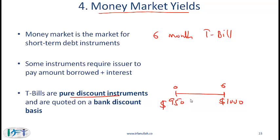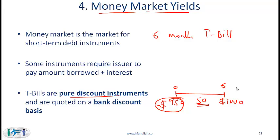From the investor perspective, he is purchasing the T-bill for $950 — that's the investment. Six months later, he will receive the face value of $1,000. The interest of $50 is a discount relative to the $1,000 face value. The market where a T-bill such as this trades would be called a money market.